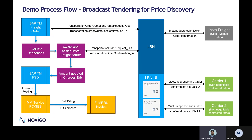Today we are going to showcase a broadcast tendering scenario with InstaFraid as one of the carriers. InstaFraid is a digital freight network that has services for full truckload scenarios in European regions. We have previously showcased a demo for UberFraid. If someone has not seen it, please feel free to see that video on the Navigo website. UberFraid is also a digital freight network with services in the US.